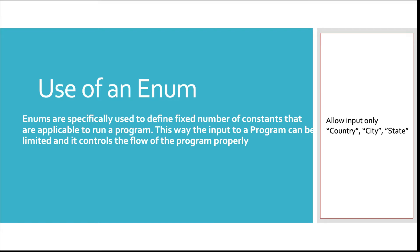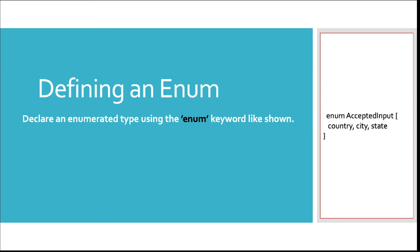Enums are a very simple way to create cleaner programs and not just float values around. For example, let's assume there's a simple input where the user has to enter their country, city, and state. We shouldn't let the user enter any free-form value. Instead, we control those inputs — country, city, and state — through the use of an enum.